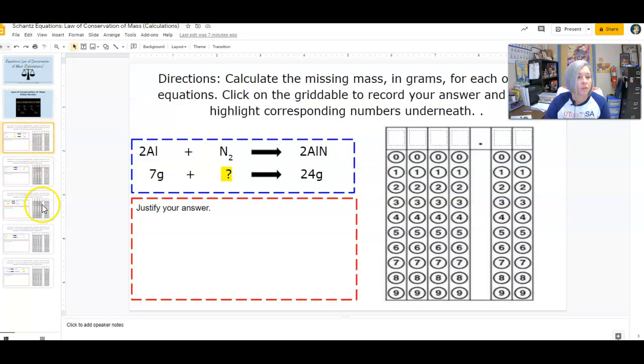Down here, you're going to see there are five different slides. What you have to do is calculate the missing mass. Remembering the Law of Conservation of Mass, whatever is on the reactant side must equal what is on the product side. So if the total on my product side is 24, the total on my reactant side must also be 24.